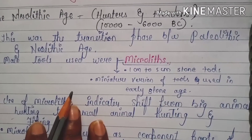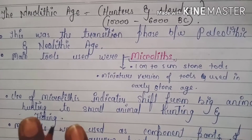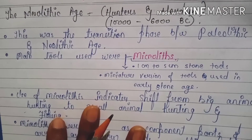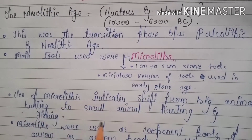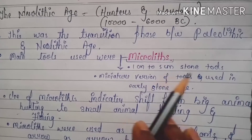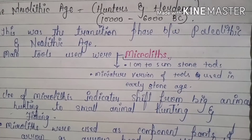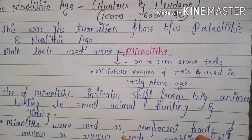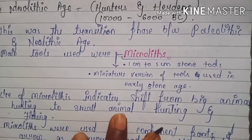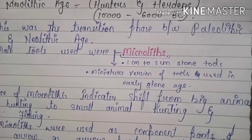Mesolithic was a transition period between Paleolithic and Neolithic age. The main tool is Microliths. Microliths range from 1 cm to 5 cm — they are a miniature version of tools which were used in the early Stone Age.